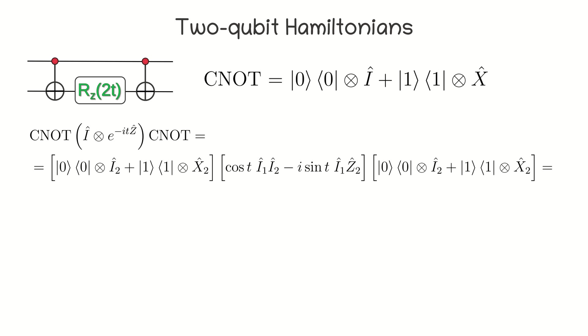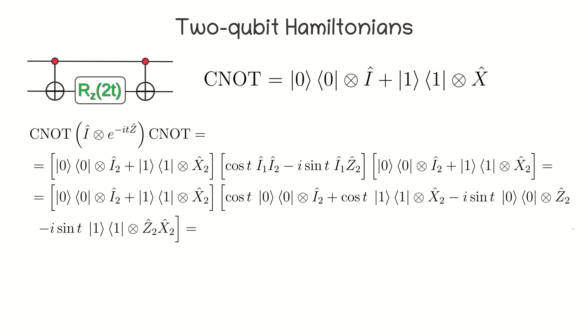First, we substitute the expression for the CNOT gate and replace the rotation gate with another representation. From here on, unless the tensor product sign is used, all products are ordinary products of matrices. Now, multiply the expression in the second bracket by the third.